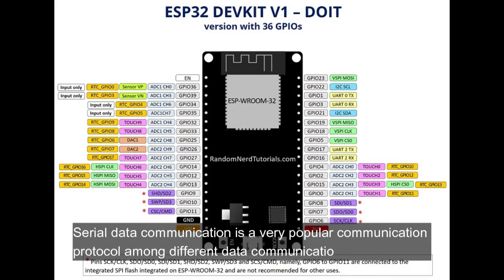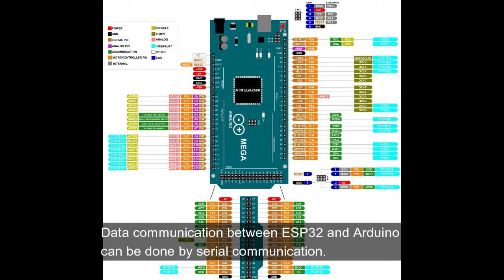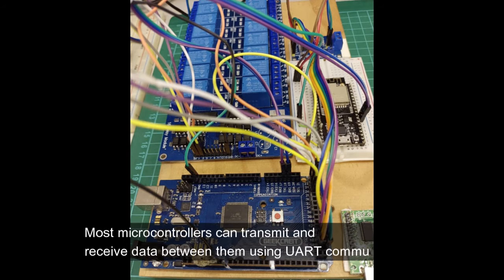Serial data communication is a very popular communication protocol among different data communication methods. Data communication between ESP32 and Arduino can be done by serial communication. Most microcontrollers can transmit and receive data between them using UART communication.